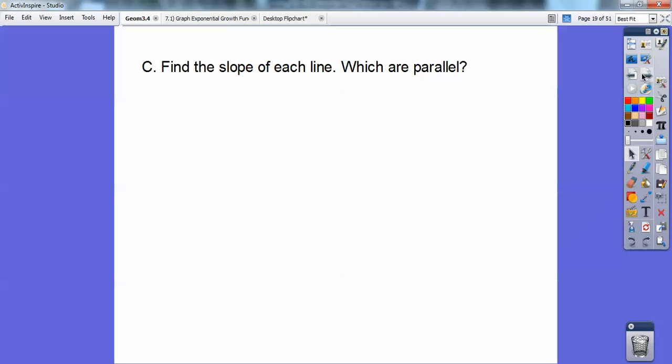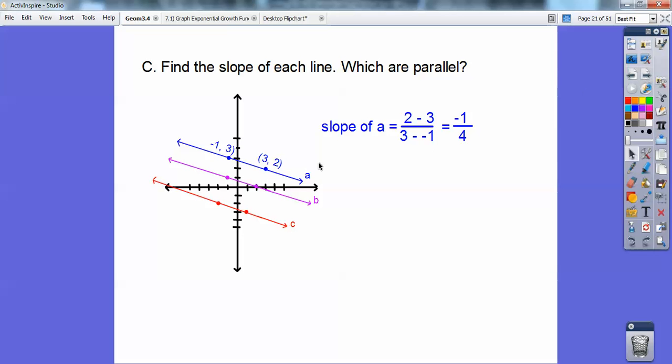Find the slope of each line and then which lines are parallel. I'm going to do slope formula with a. So I'm going to go this y minus this y over this x minus this x. That's 2 minus 3 over 3 minus negative 1. This becomes 3 plus 1 on the bottom. 2 minus 3 is negative 1, so the slope of a is negative 1 fourth.